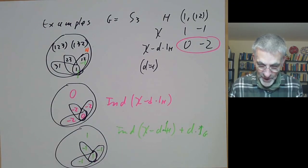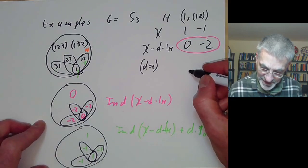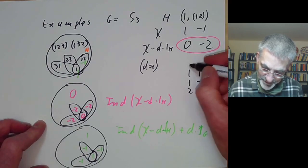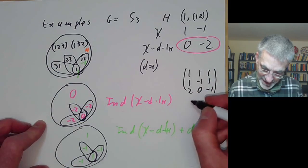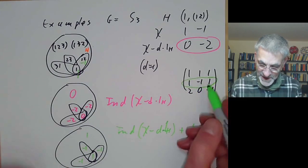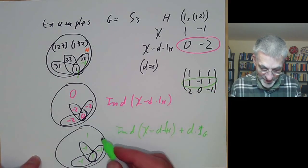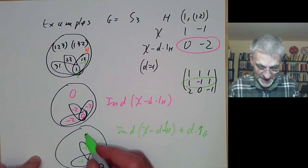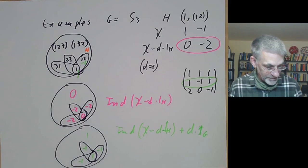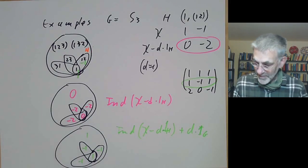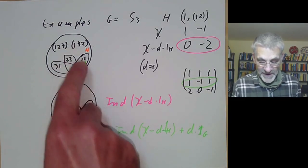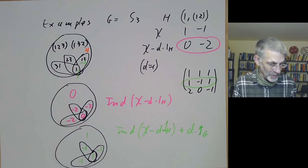Recalling the character table of S3, which looks like: (1,1,1), (1,−1,1), (2,0,−1) — our character is the second row, with values 1, −1, 1. In this case the character is a representation whose kernel is exactly the subgroup K consisting of the identity and the elements that don't fix anything. That proves Frobenius' theorem: the elements that don't fix anything together with the identity in a Frobenius group form a normal subgroup.